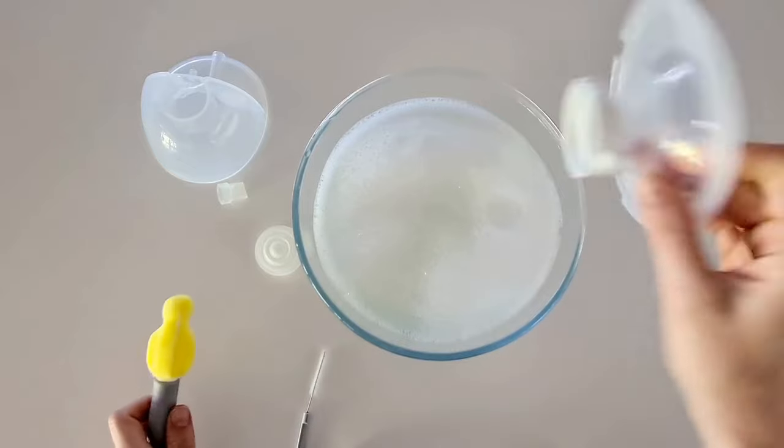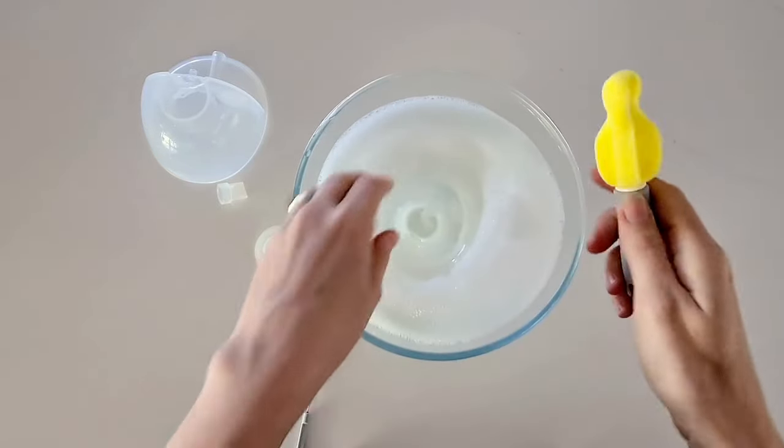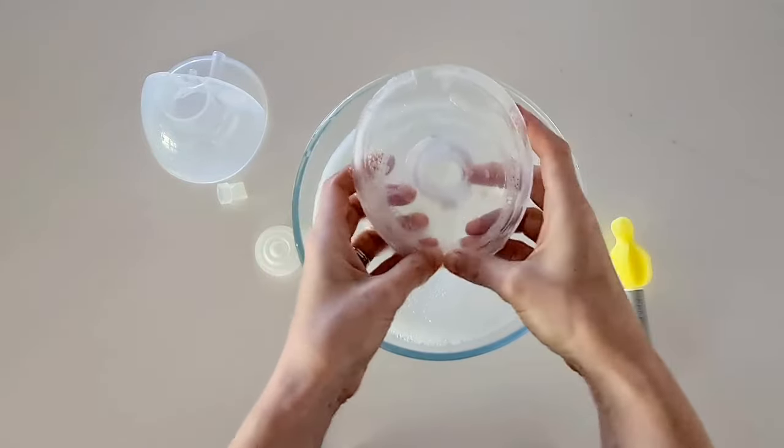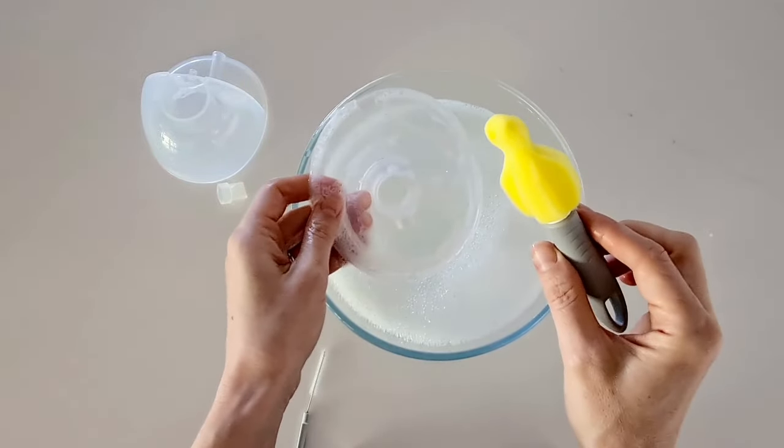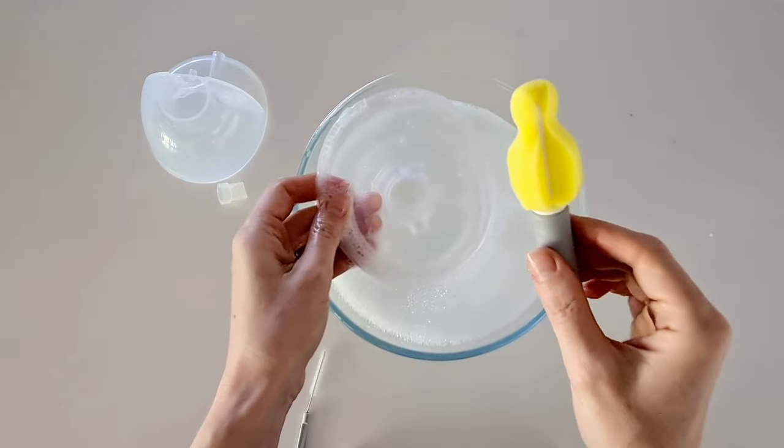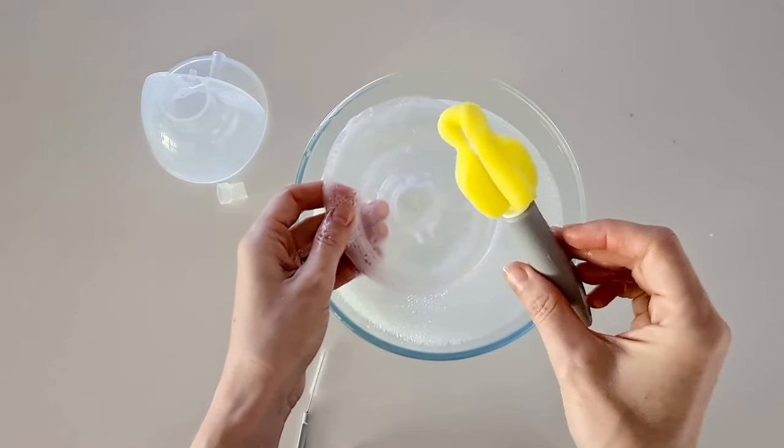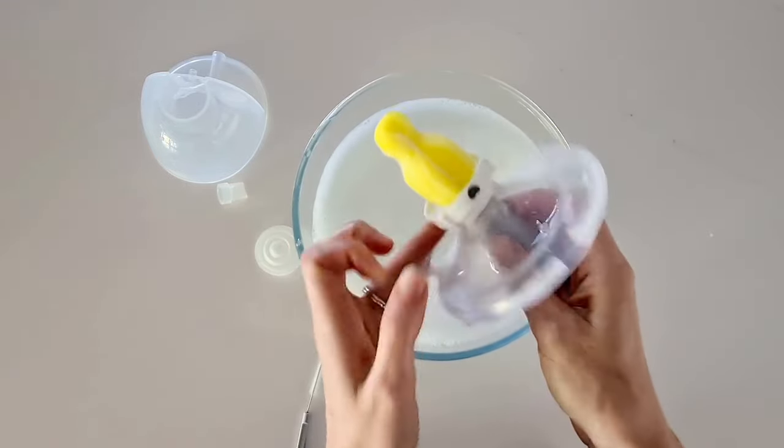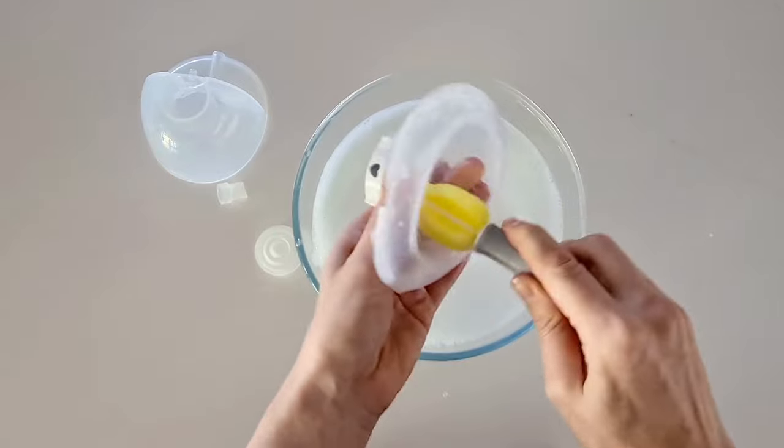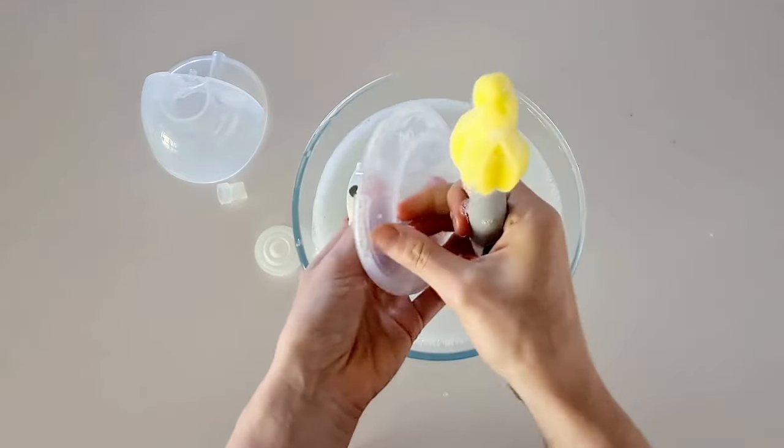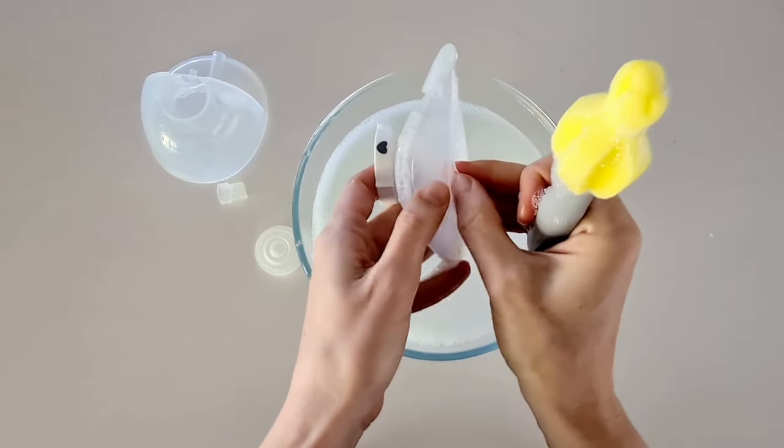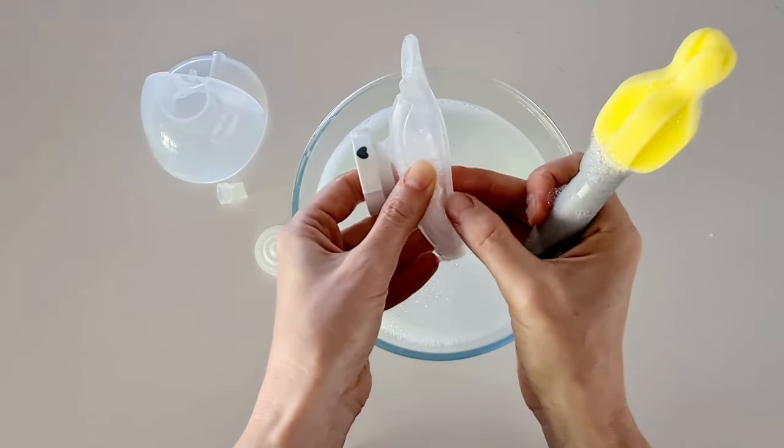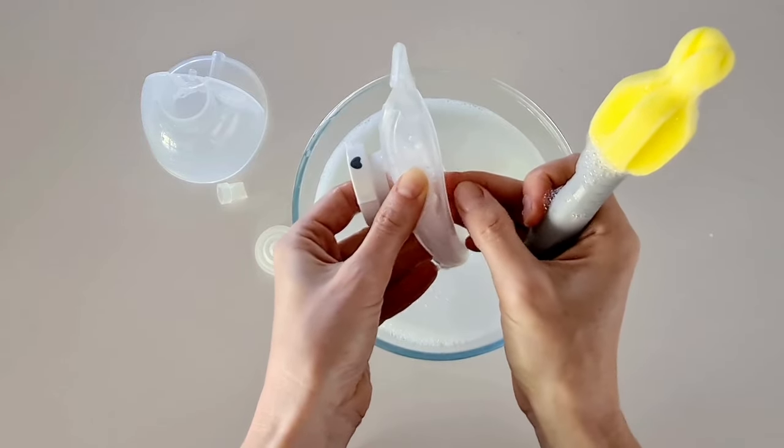You can do this in the sink. For this demonstration I am just doing it in a bowl. You simply pop your pump part into the warm water. You can use your fingers, ideally use a bottle brush or a sponge. This is the one that came with my Momcozy M5 kit. What you're wanting to do is make sure you get into all the little parts of the flange, especially on the M5 as well as the S12 Pro.